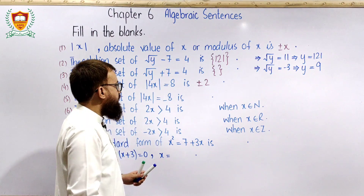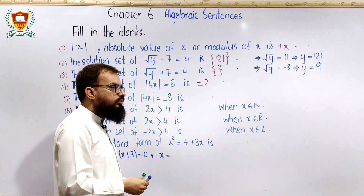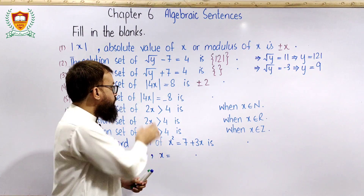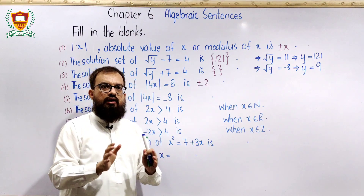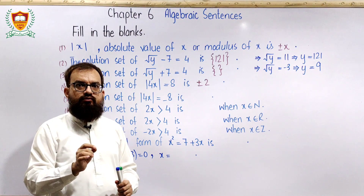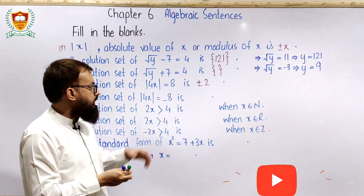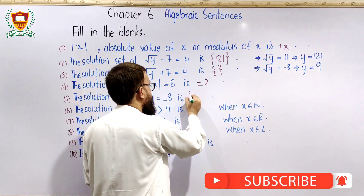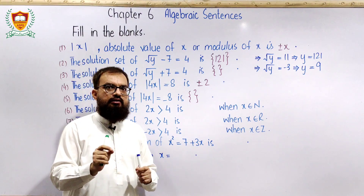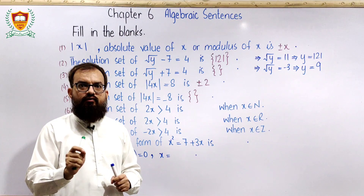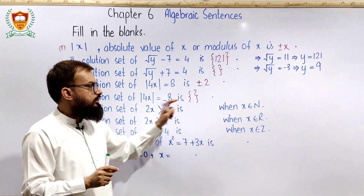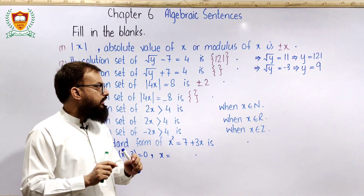اب دیکھتے ہیں |4x| = −8۔ Absolute value ہمیشہ non-negative ہوتی ہے — absolute value can never be negative۔ اس لیے اس کا solution set empty set ہے۔ Reason: an absolute value can never be negative, therefore the solution set is empty set۔